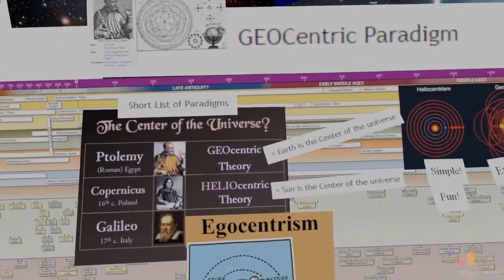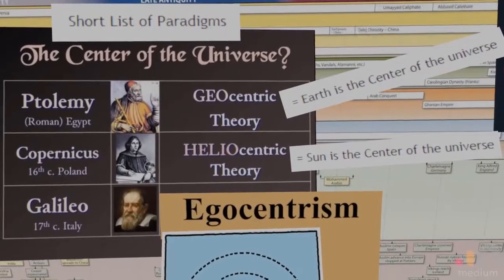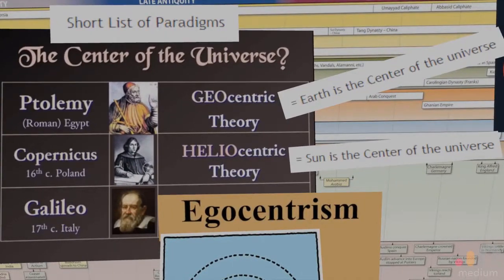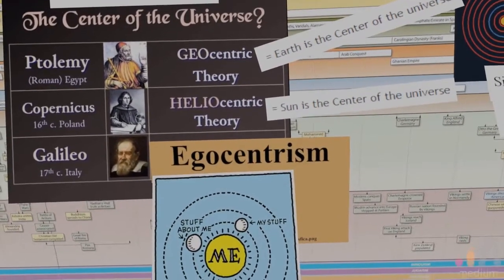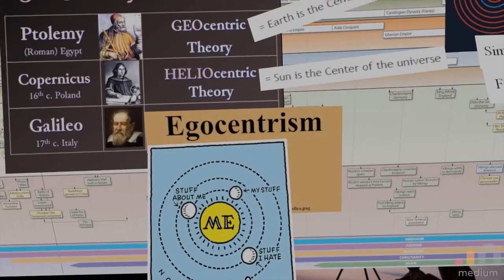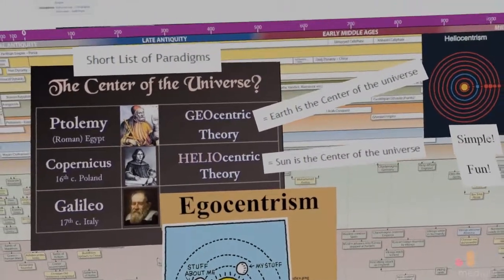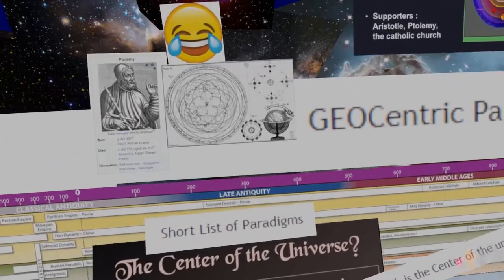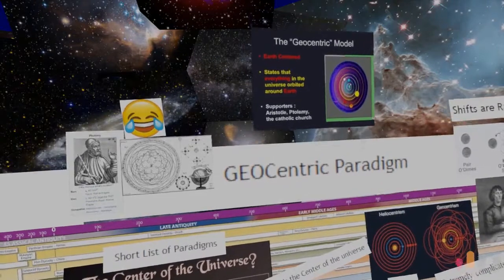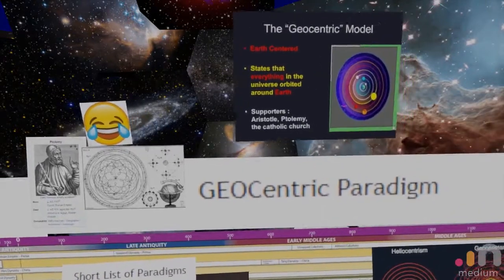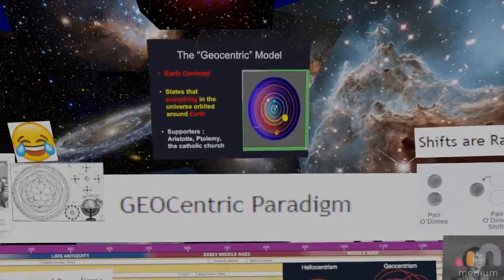We have the geocentric model, which says the Earth is the center of the universe. We have the heliocentric model presented by Copernicus, that says the Sun is the center of the universe. And then of course the egocentric model presented by Galileo. From the year 100 AD all the way until the year 1500 something, people believed in the geocentric paradigm.